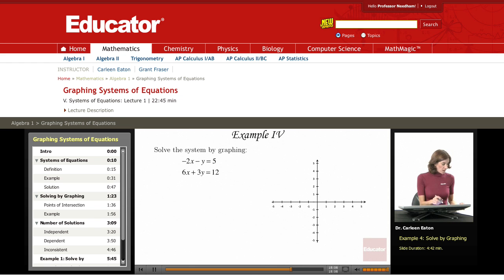For our last example, we're going to solve the following system by graphing: minus 2x minus y equals 5, and 6x plus 3y equals 12.